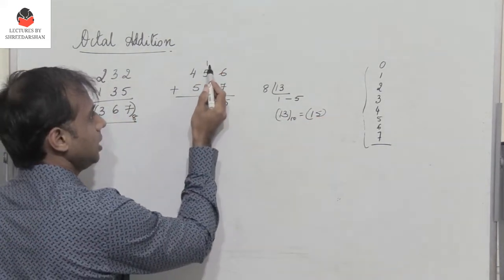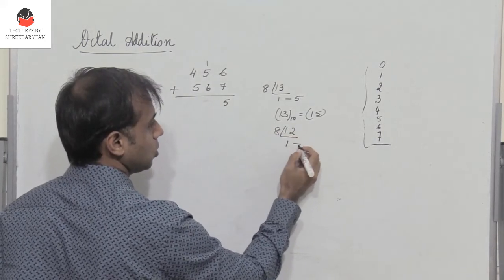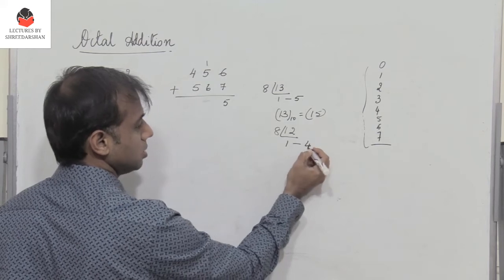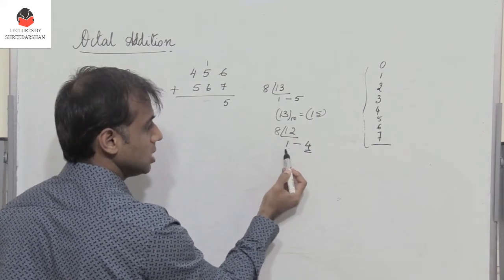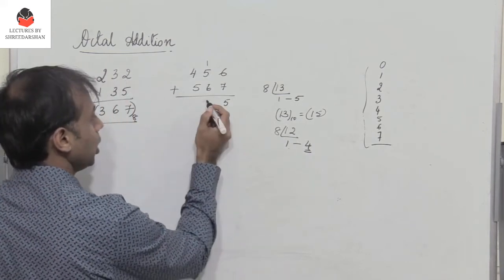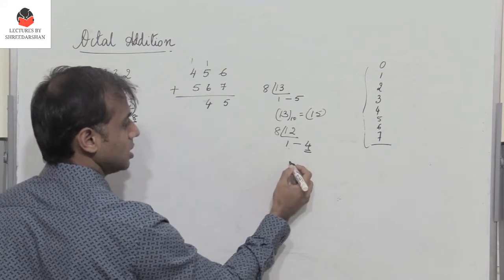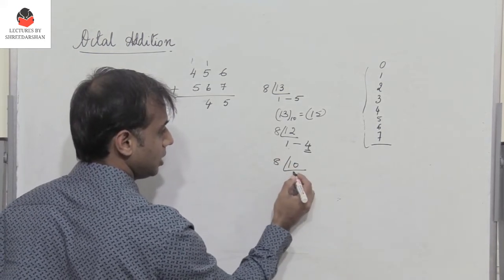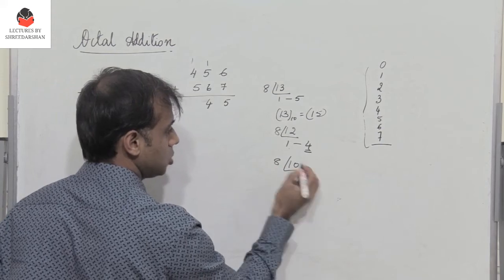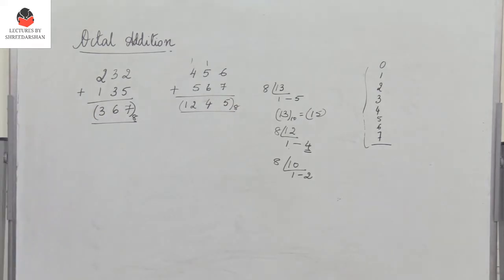Here I have 6 plus 5 plus 1 is 12. Divide 12 by 8: I get 1 as the quotient and 4 as the remainder, so 1 4. I write 4 with a 1 carry. 5 plus 4 plus 1 is 10 in decimal. Divided by 8, I get 1 2. So the added result in octal is 1 2 4 5.